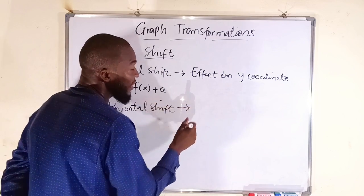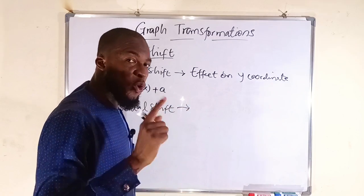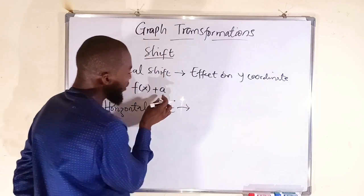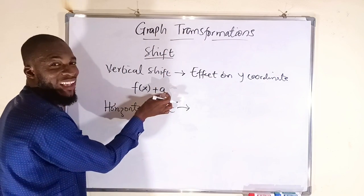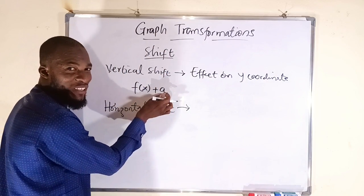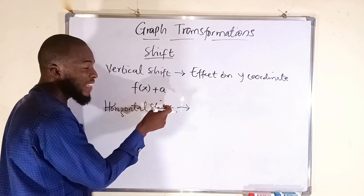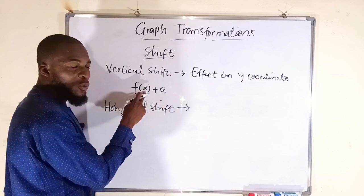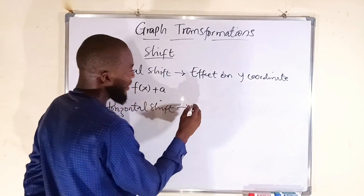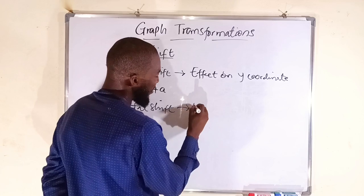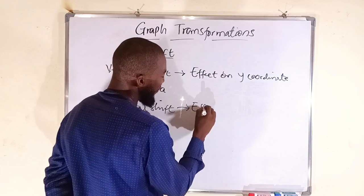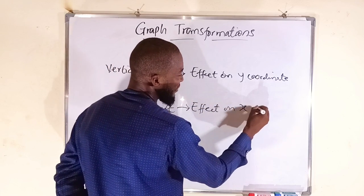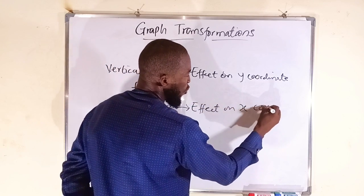Horizontal shift is an effect on the x-coordinate. This is why we call it an internal change — the change happens inside the function. If the effect is on x, the argument of the function will be affected inside. So horizontal shift is an effect on the x-coordinate.